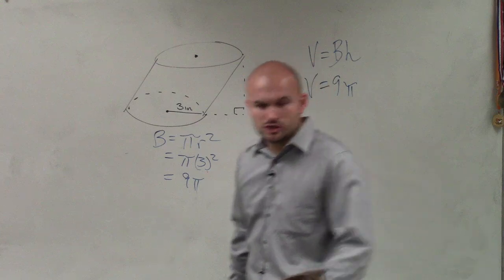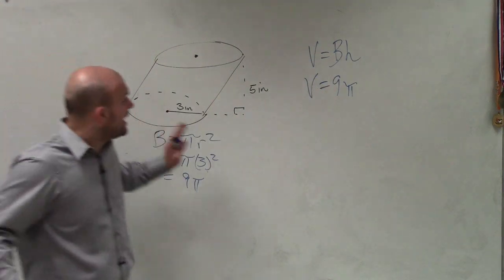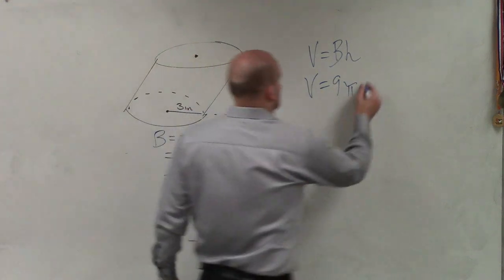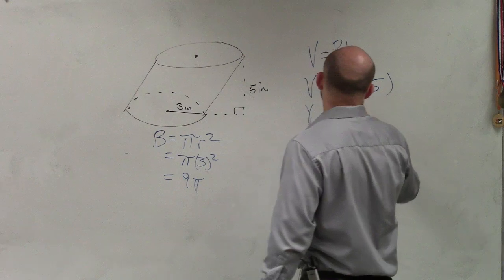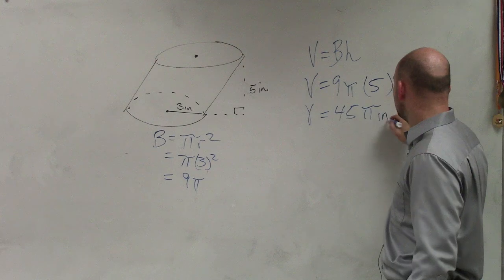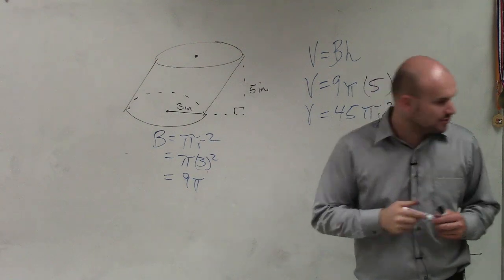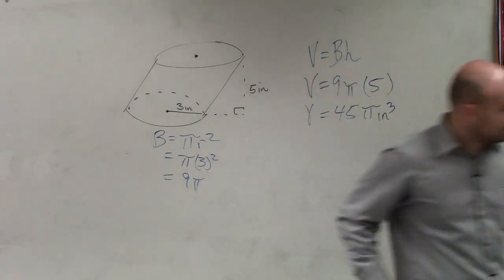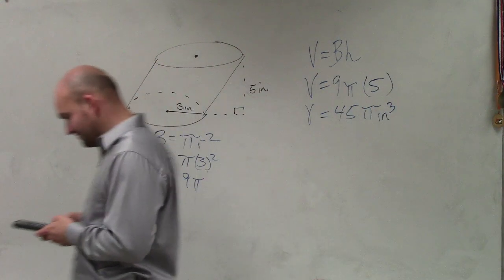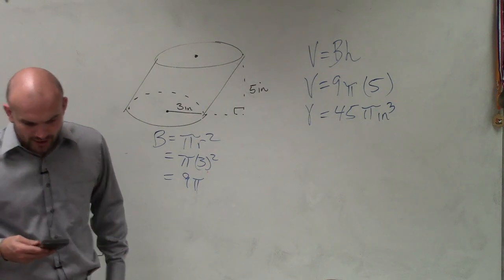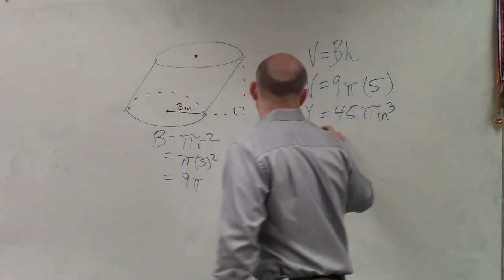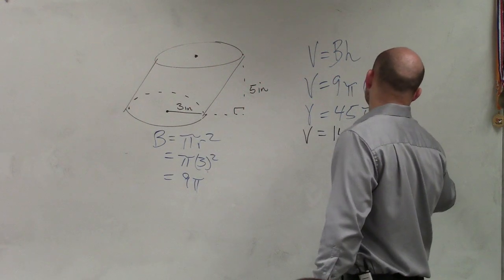Then I need to determine the height. What is the height — how tall is this cylinder? I know it's slanted, but you can see from the base to the top is 5 inches. So volume equals 45 times pi. Remember, this is inches, so our unit is going to be cubed — inches cubed. I take my calculator and 45 times pi is going to be 141.4 inches cubed.